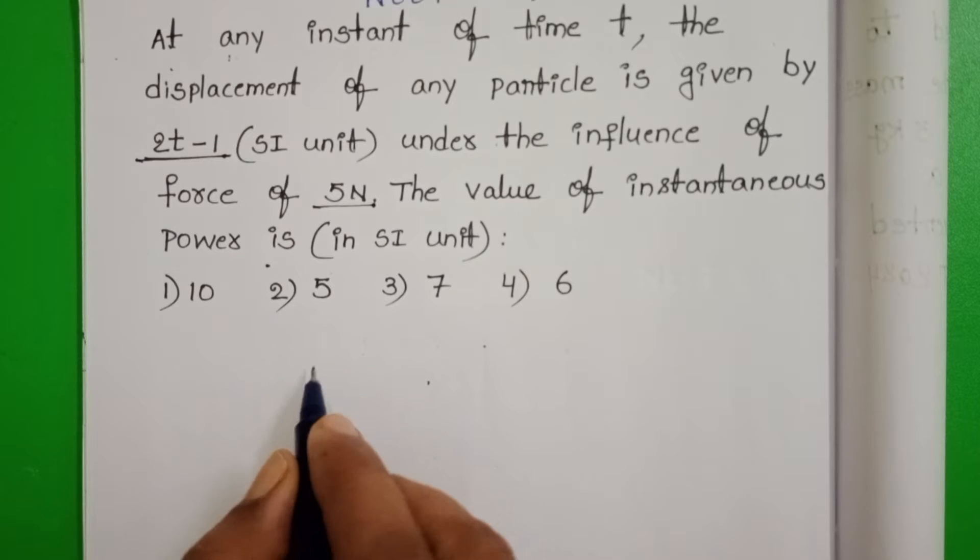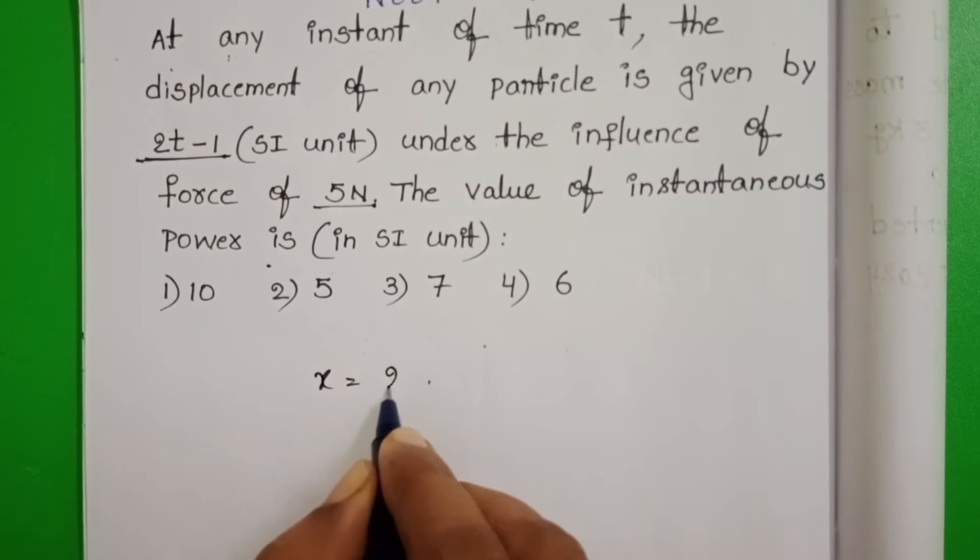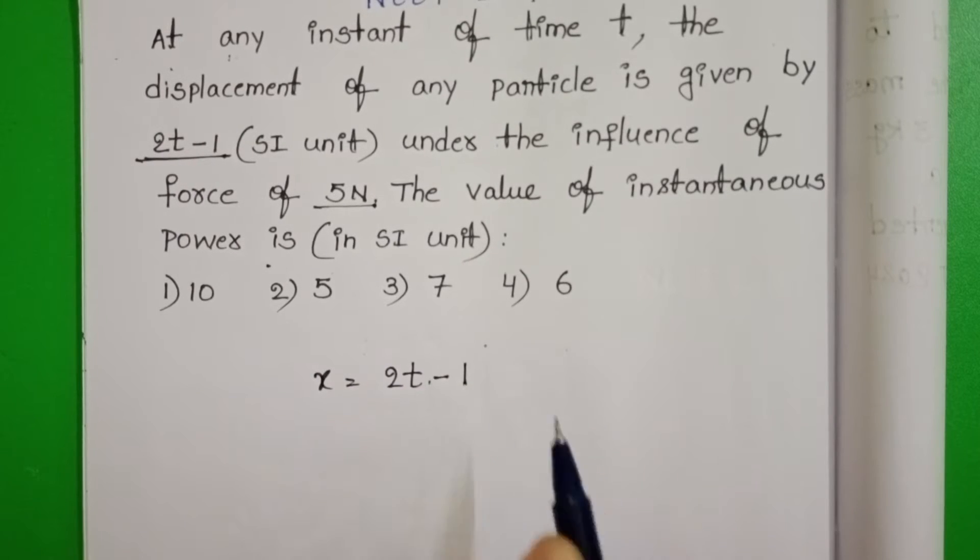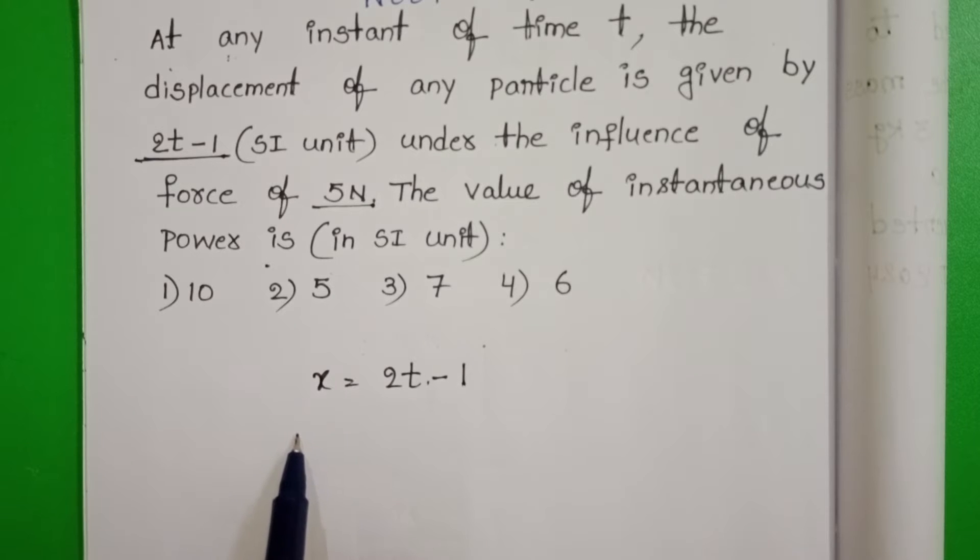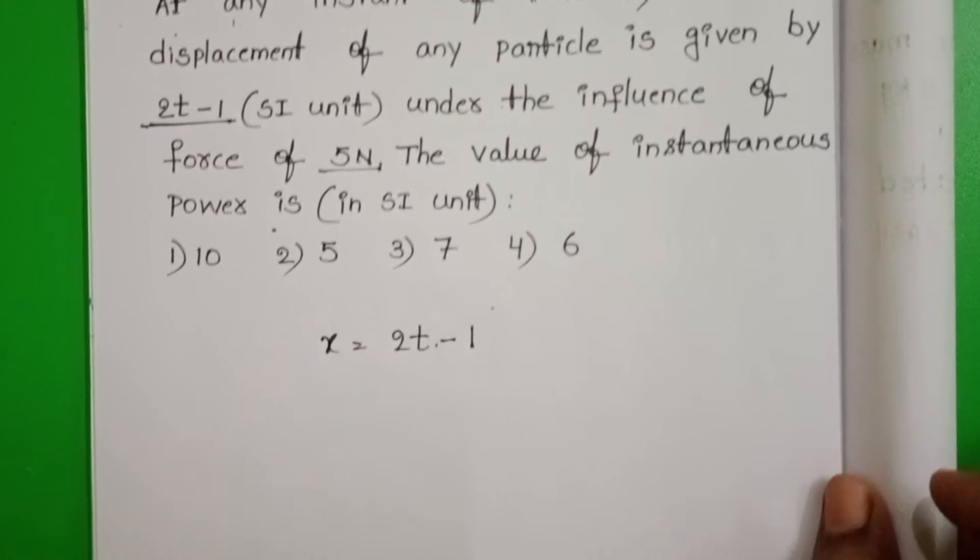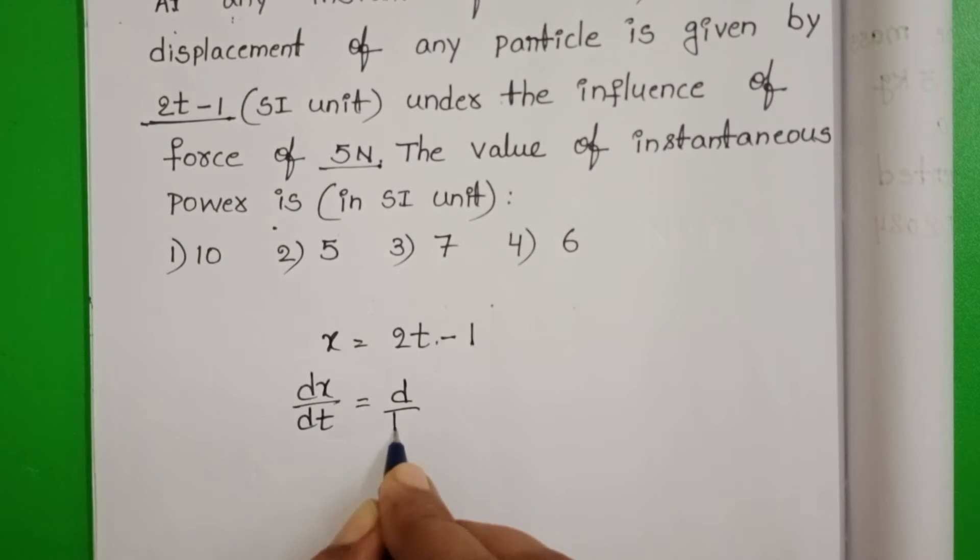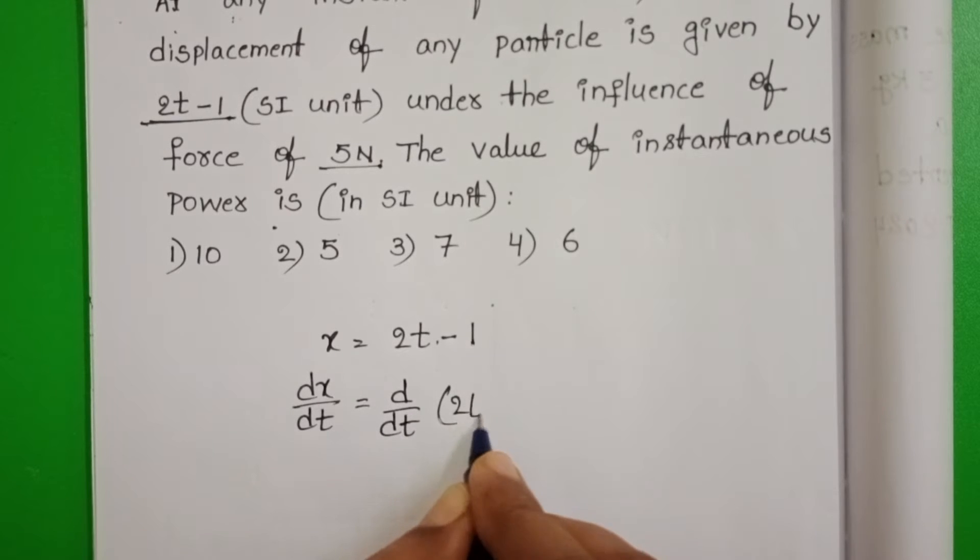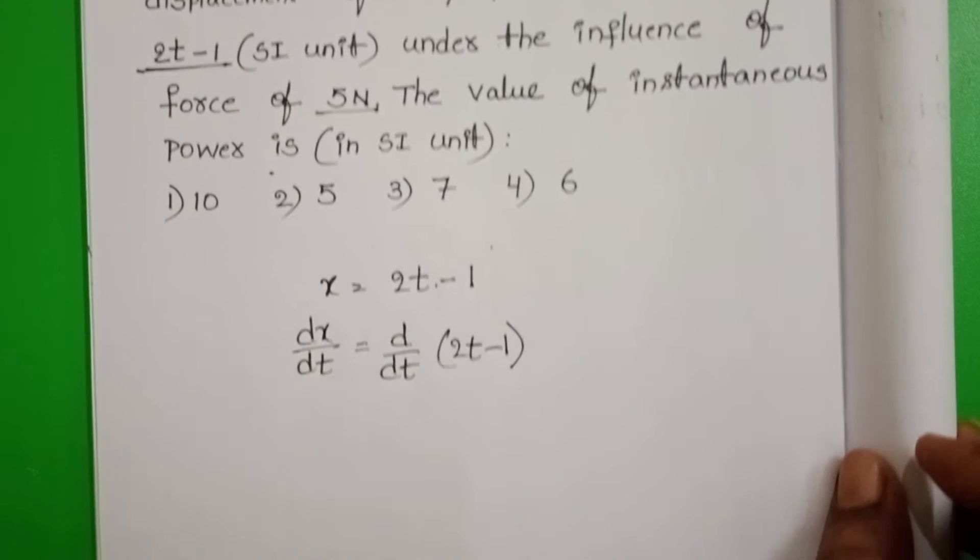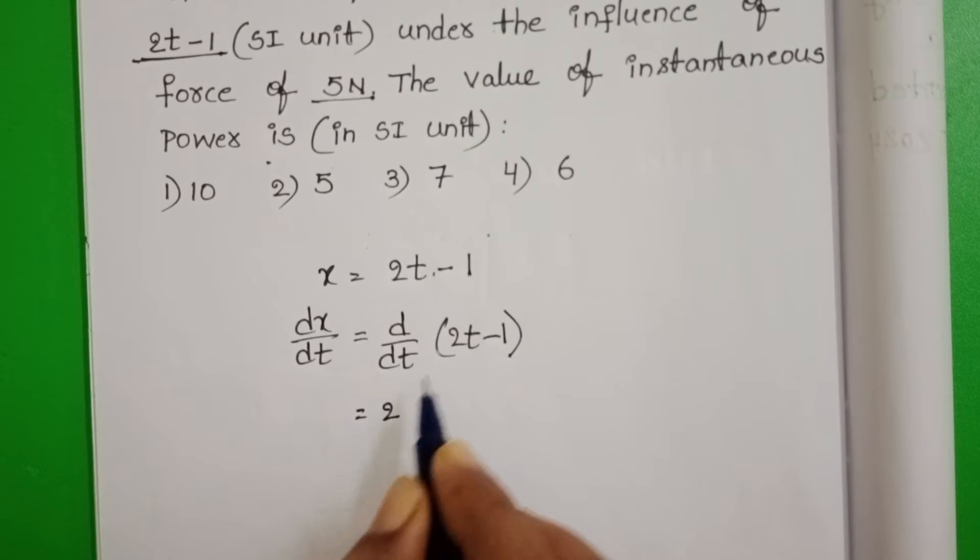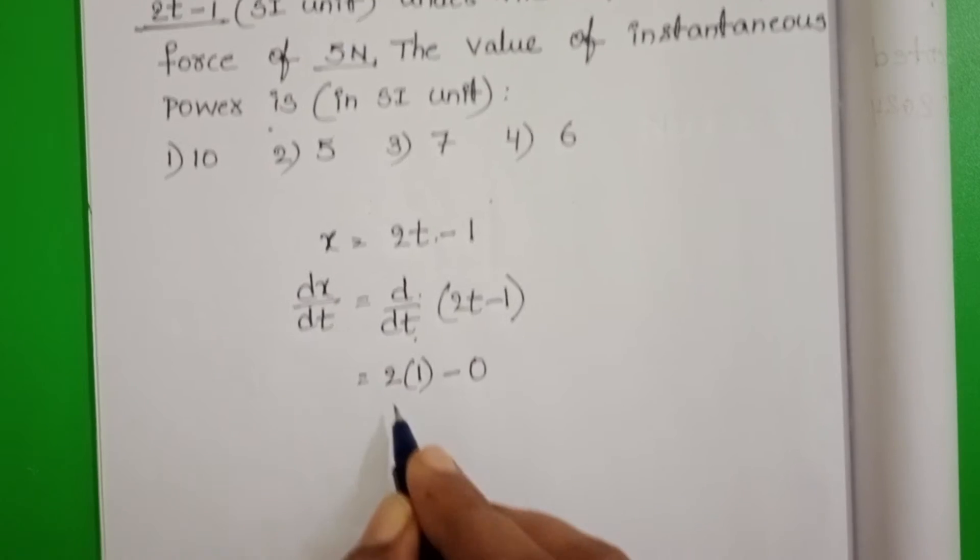Given displacement equals 2t minus 1. Now differentiate x with respect to time, then it gives velocity. So dx/dt, rate of change of displacement, d/dt of 2t minus 1. 2 is constant, dt/dt is 1, and differentiation of only constant is 0.